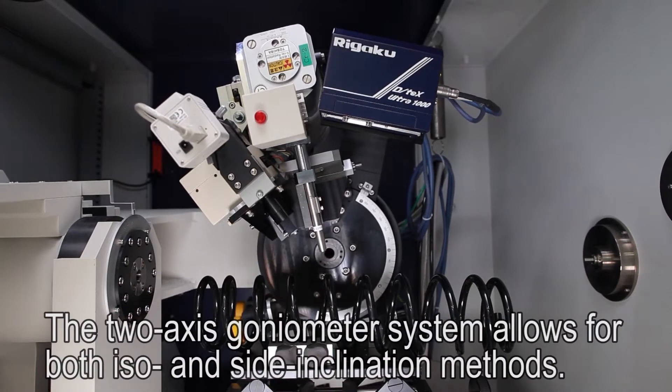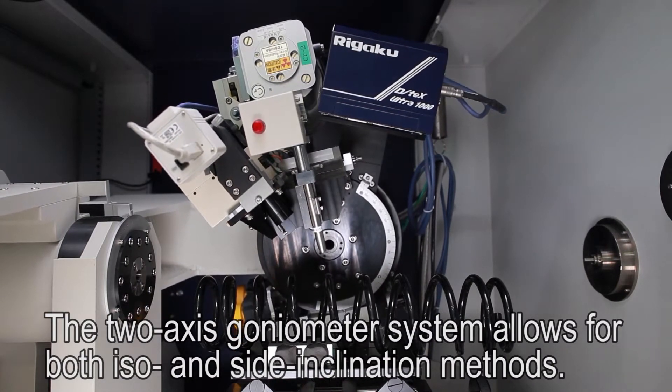The two-axis goniometer system allows for both ISO and side inclination methods.